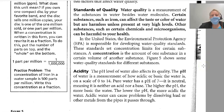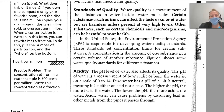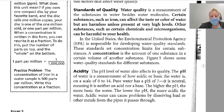Acidity. The pH level of water also affects water quality. The pH of water is a measure of how acidic or basic the water is on a scale of 0 to 14. Pure water has a pH of 7 — it is neutral, meaning it is neither an acid nor a base. The higher the pH, the more basic the water; the lower the pH, the more acidic the water. Acidic water can cause problems by dissolving lead or other minerals from the pipes it passes through.